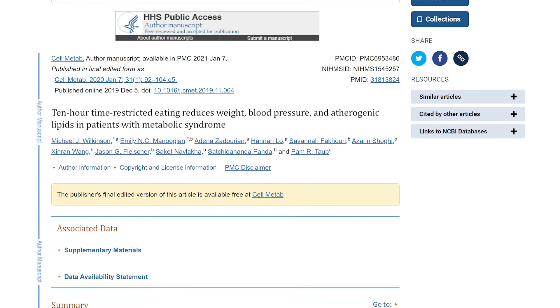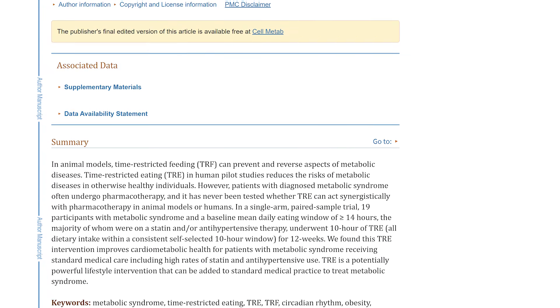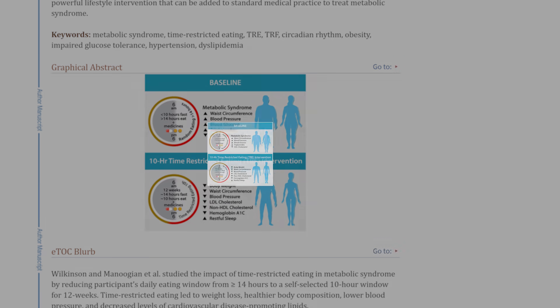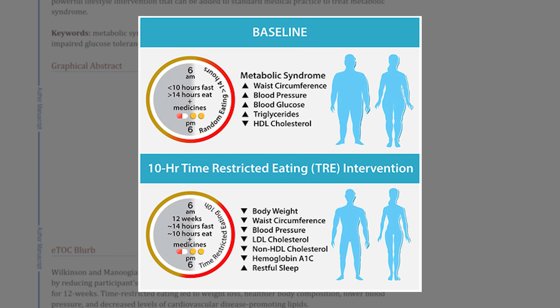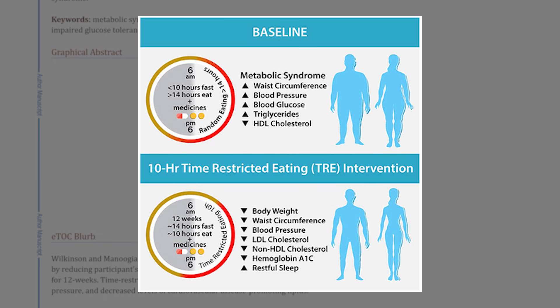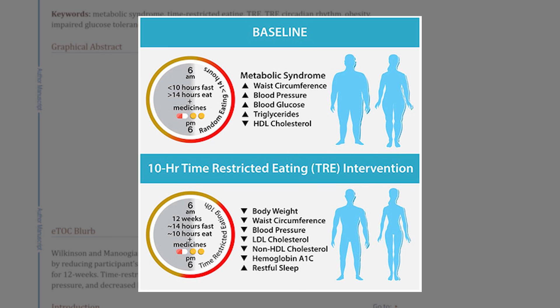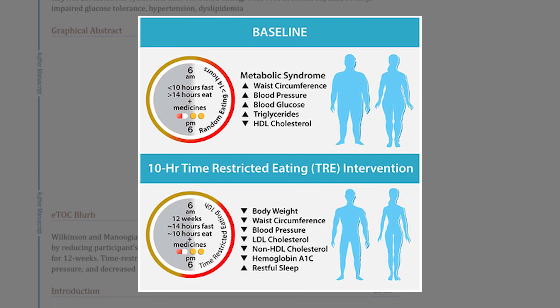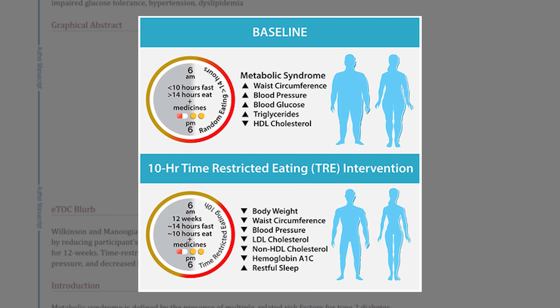To give you some perspective, patients with metabolic syndrome who were being treated with medication were asked in a research study to condense their daily eating window from 14 or more hours down to 10 hours. They did this for three months and got significant improvements in their metabolic syndrome criteria. They lost weight, lost belly fat, decreased their blood pressure and fasting blood glucose, and improved their blood cholesterol profiles. Nothing changed with their medications — the only change was that they reduced their eating window to 10 hours.